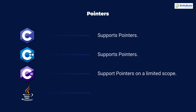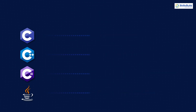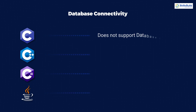So in C# we have a limited scope for pointers. Java, on the other hand, does not support pointers at all — because it is powerful enough without them and can perform all the same functions that pointers provide. Java simply does not need pointers.